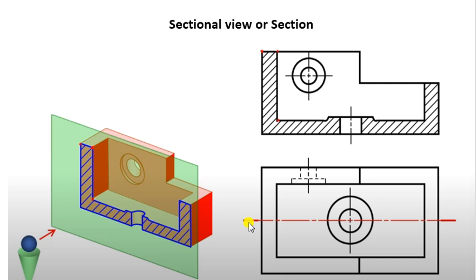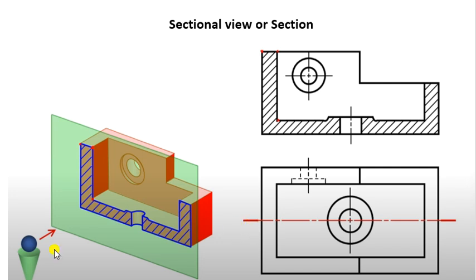The red line is the sectional line — the cutting plane edge as seen from the edge. It is noted by a line shown in the top view, and at the ends it is thickened.